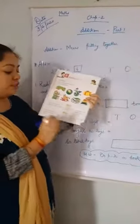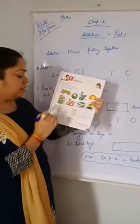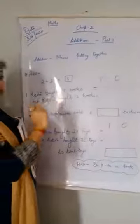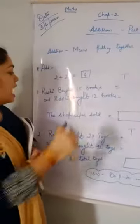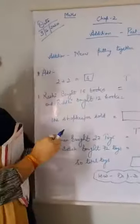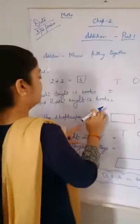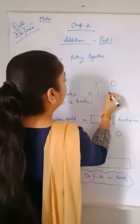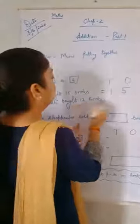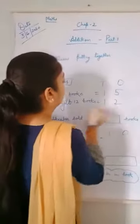So we will do exercise number 19. See, what is the question? Rashi bought 15 books and Riddhi bought 12 books. Okay, Rashi bought how many books? 15 books. And Riddhi bought how many books? 12 books.